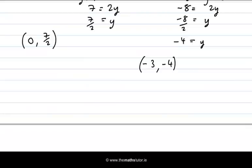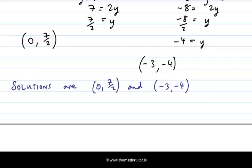These are the two unique solutions to the pair of simultaneous equations that I had. So my solutions are 0 and 7 over 2 and minus 3 and minus 4. And if we were to express this geometrically, we would have the points of intersection between the quadratic equation, which is a curve, and the linear equation, which is the equation of a straight line.